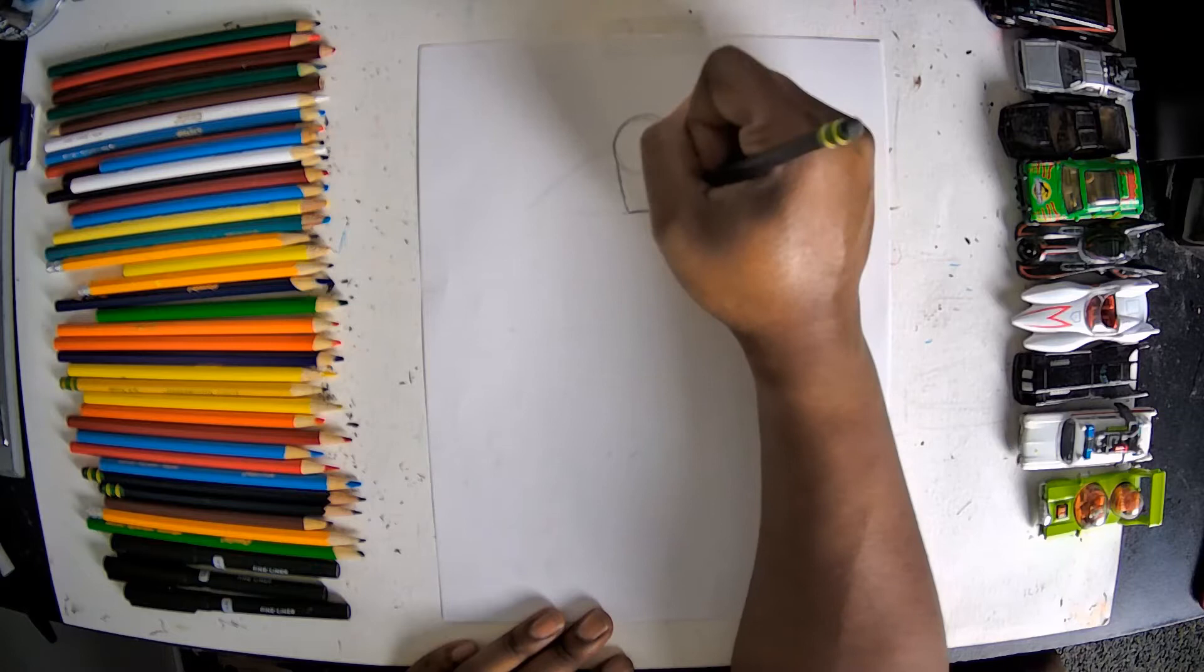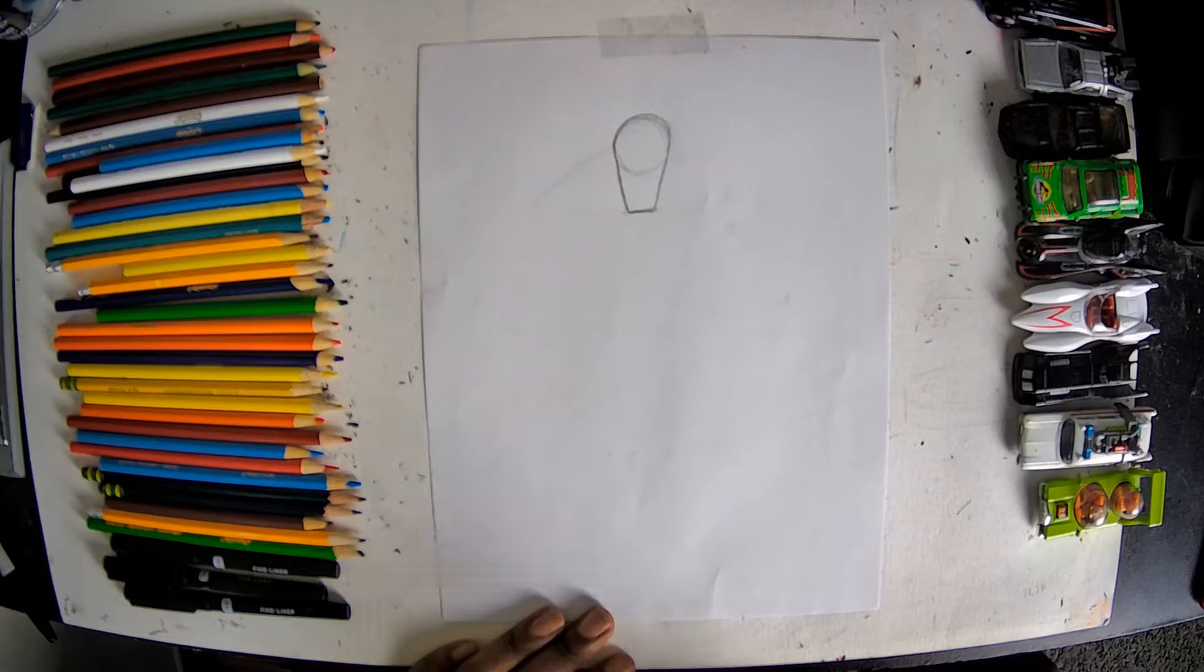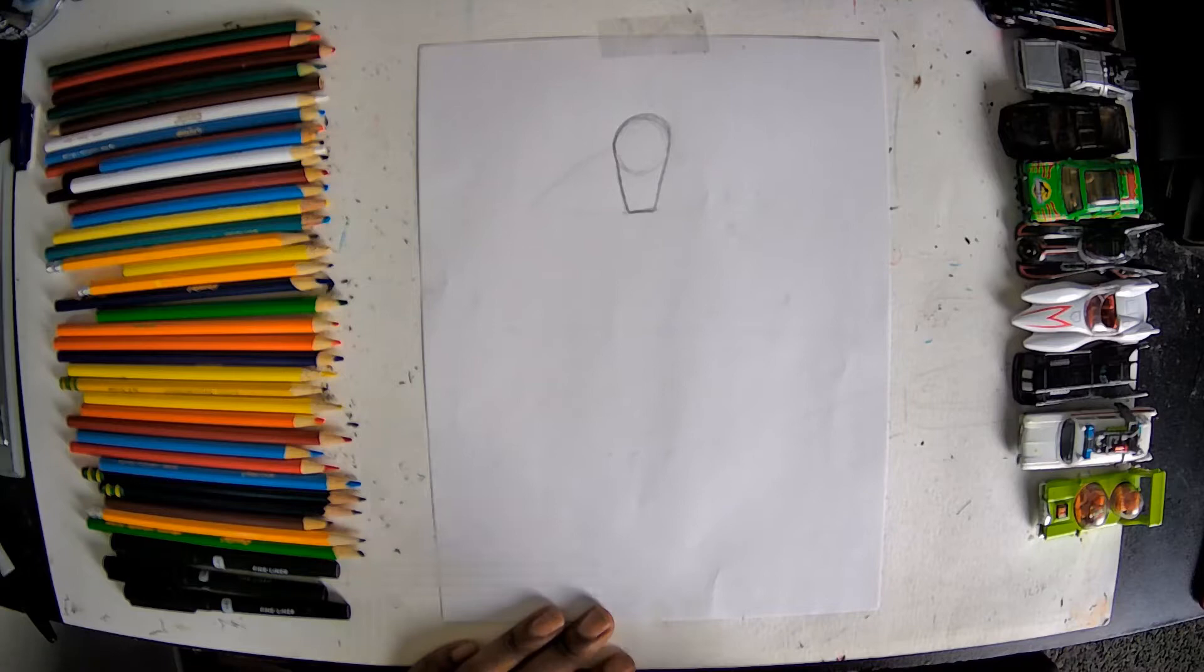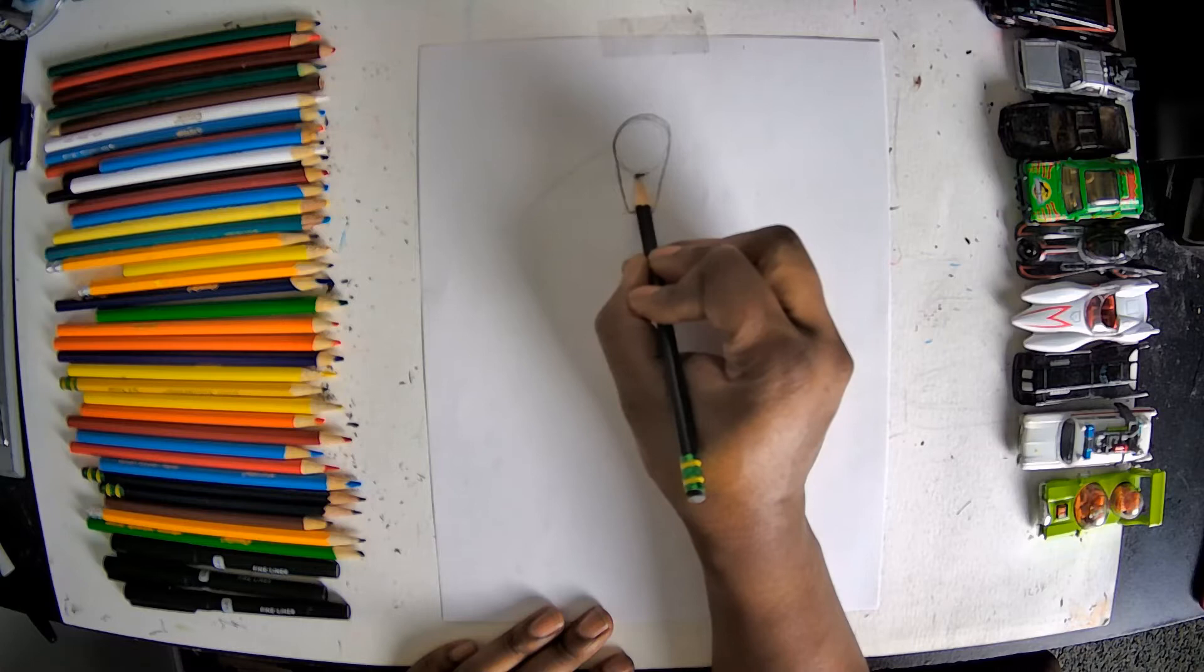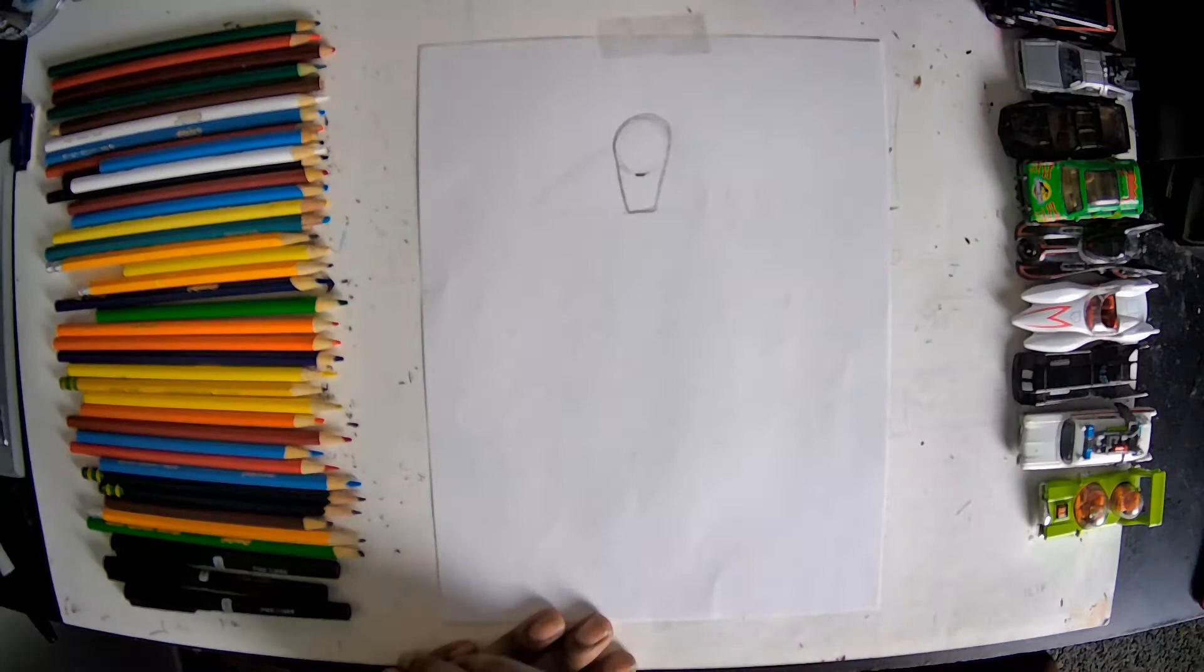So what we've done with the circle, two lines, and the bottom is kind of create the outline of Waldo's head. Now basically where the bottom of your circle is, we're just gonna put a line across right there because that's gonna be where Waldo's nose falls.